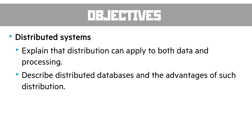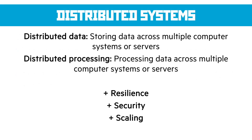Finally, distributed systems have two different parts. Distributed data is where the data is stored across multiple computers, systems, or servers. Distributed processing is where we split the processing across multiple computers — different from parallel processing, which involves parallelization on the same computer system. Here the job is split and sent to different physical devices to complete, then pulled back together. The positives are greater resilience because there are more nodes — if some are broken, the rest still work. It's better for security, sending secure data to more secure locations and increasing security on those high-security parts. And scaling is easy: if you need more processing power or storage, you simply add more nodes, which would be difficult in a standalone computer system.